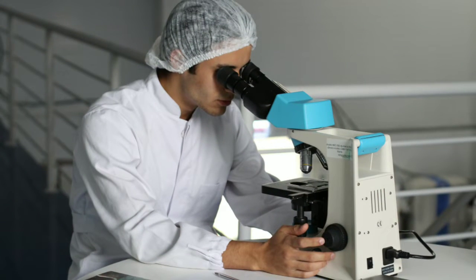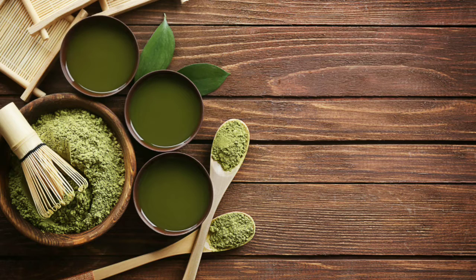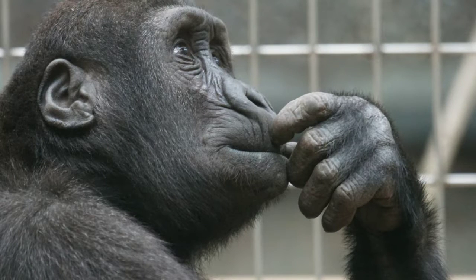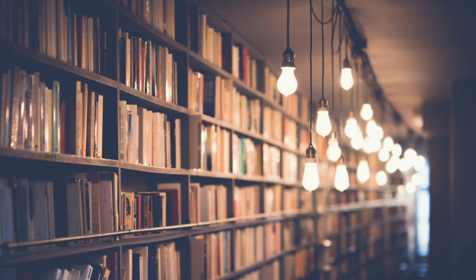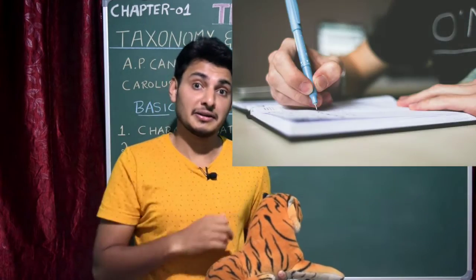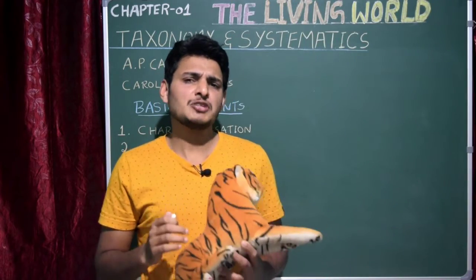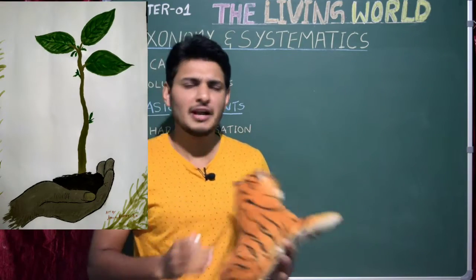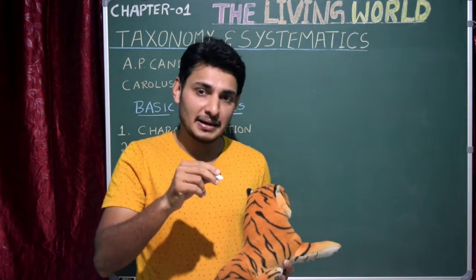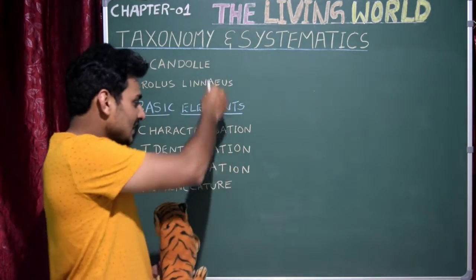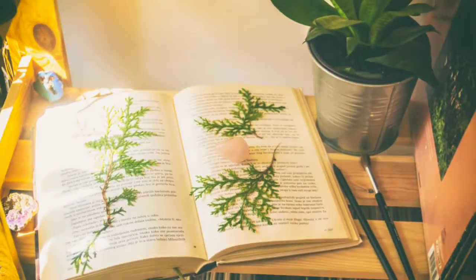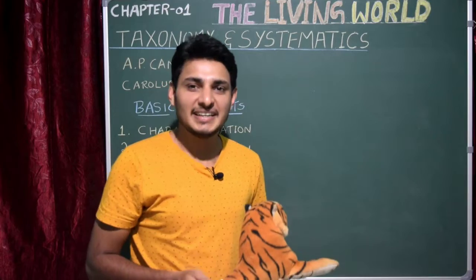Imagine you are a researcher working on a plant species and you accidentally discover a medicine for cancer. Now you want to publish your discovery. If you don't know the name of the plant, or if someone has already given a name to the plant, suppose the plant species is new to the world and nobody knows about it — you are going to give it a name by following a set of rules. That is actually taxonomy. You give a scientific name and publish the article.